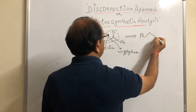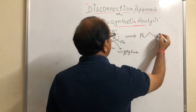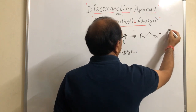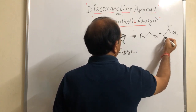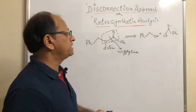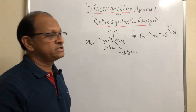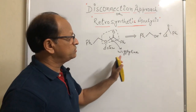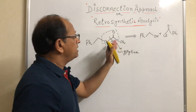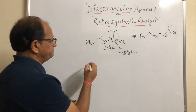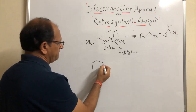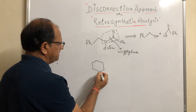अब इसके बाद हम इसके reactants को यहाँ पर show कर देंगे। इसमें से एक तो होगा alcohol, और दूसरा ये carbonyl group वाला compound — जहाँ हम halogen लगा लेते हैं। तो ये PhCH₂COCl और एक PhCH₂CH₂OH हो जाएगा। इस तरह से हम एक ester को उसके alcohol और acid या acid derivative में convert कर सकते हैं।